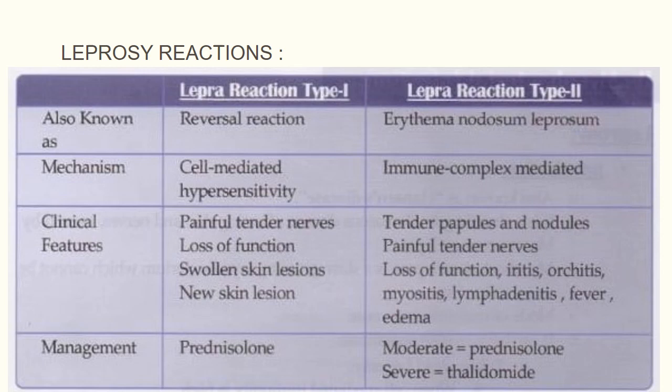Lepra reaction Type 2, also known as erythema nodosum leprosum, occurs in lepromatous leprosy. It is an immune complex-mediated condition. Tender papules and nodules appear, along with painful tender nerves, loss of function, iritis, orchitis, myositis, lymphadenitis, fever, and edema. In moderate conditions prednisolone can be given; however, severe conditions may require thalidomide.